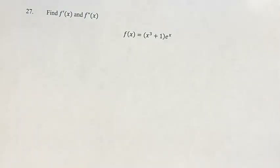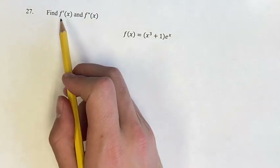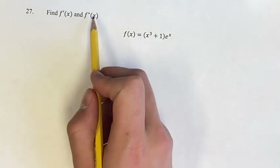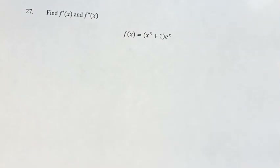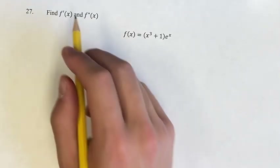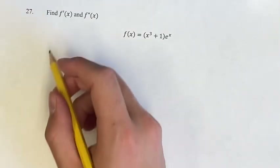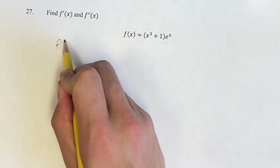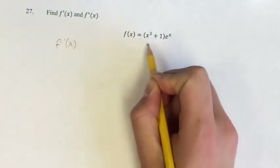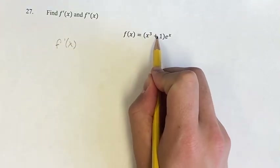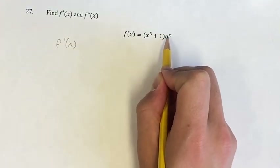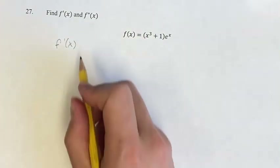Hello and welcome back to another video. In this part, we're looking to find the derivative of x and the second derivative of x. So first, worrying just about the derivative, we're going to use the product rule. So we have x cubed plus 1, all times e to the x.